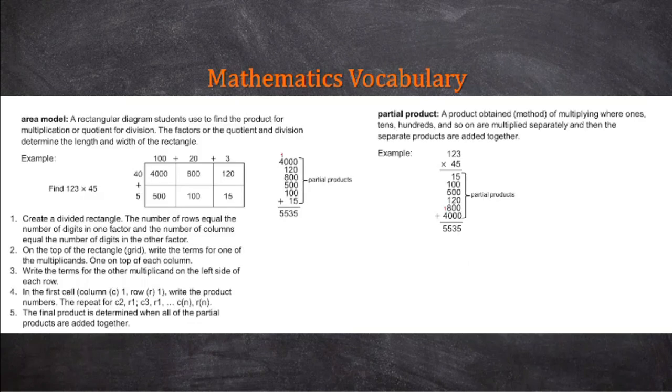The mathematics vocabulary we're focusing on today is area model, which is a rectangular diagram students use to find the product for multiplication or quotient for division. It has a length and width, and we break up the numbers into their terms, so 120 and 3 for 123 and 40 plus 5 for 45. Then we determine the partial products by multiplying the numbers across and up to get these partial products, and then we add them all up to get the answer.